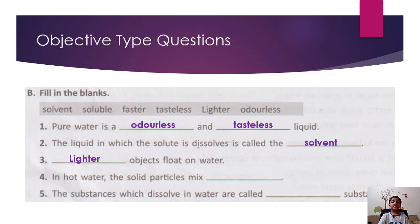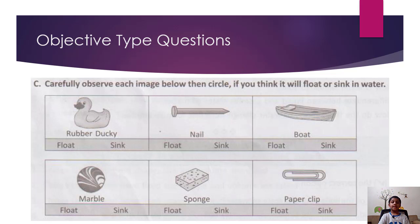Lighter objects float on water. In hot water, solid particles mix faster. The substances which dissolve in water are called soluble substances.